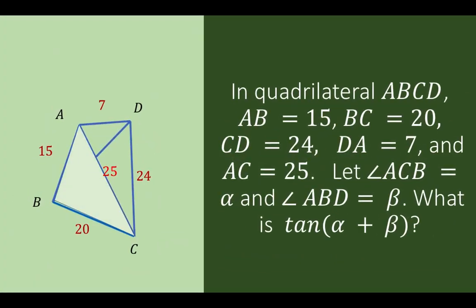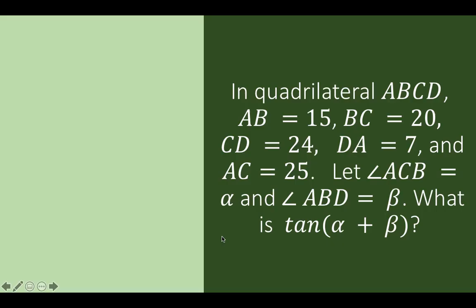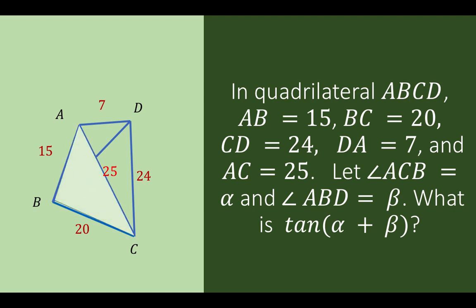Hi everyone, let's talk about cyclic quadrilaterals and demonstrate this lesson using this problem. In quadrilateral ABCD, AB equals 15, side BC equals 20, side CD is 24, and side DA equals 7. The diagonal AC is equal to 25. Let angle ACB be equal to alpha, and let angle ABD be equal to beta. What is the value of tangent of alpha plus beta?